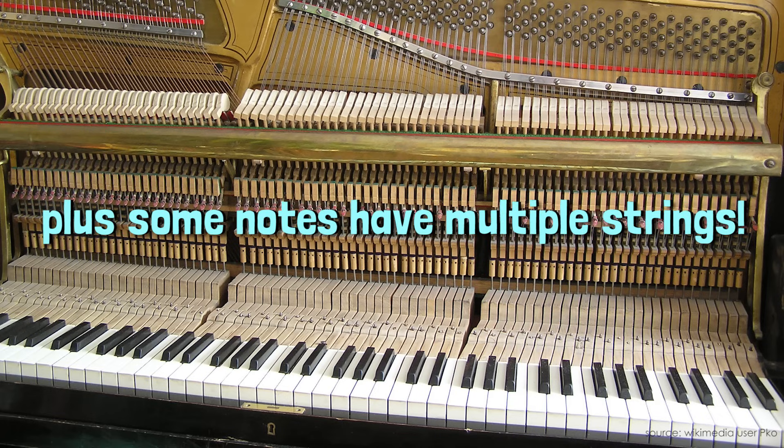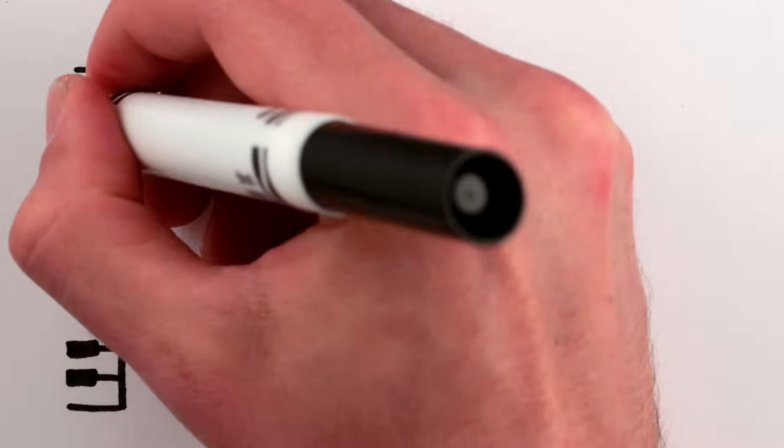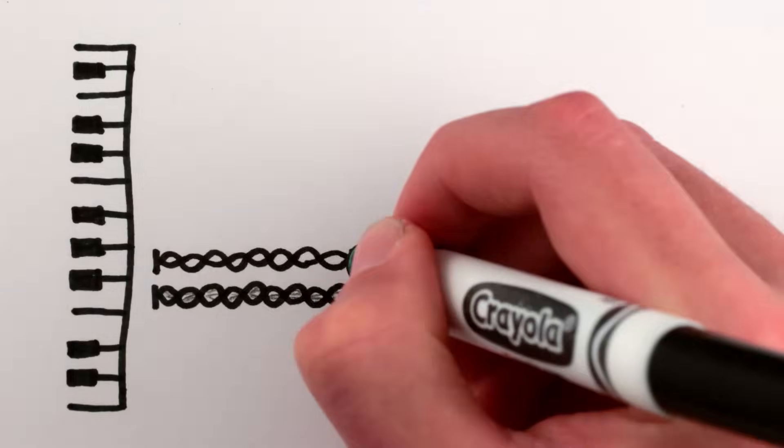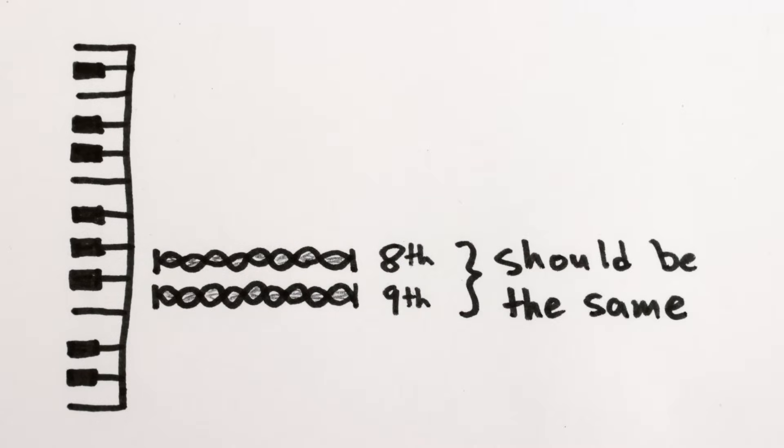If you wanted to tune these strings using harmonics, you could, for example, try using whole steps. That is, you could compare the ninth harmonic on one key to the eighth harmonic two keys up, which works fine for the first few keys.